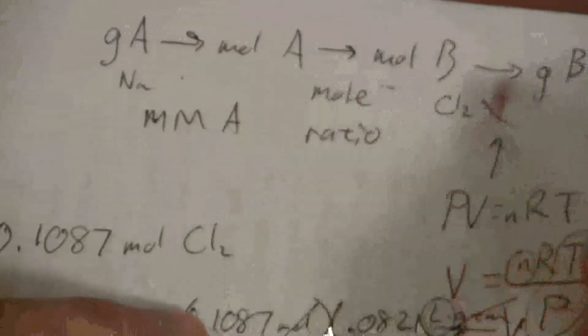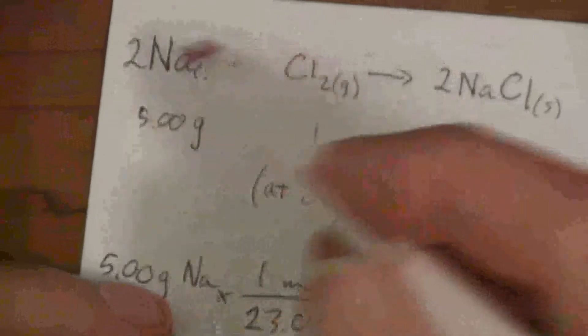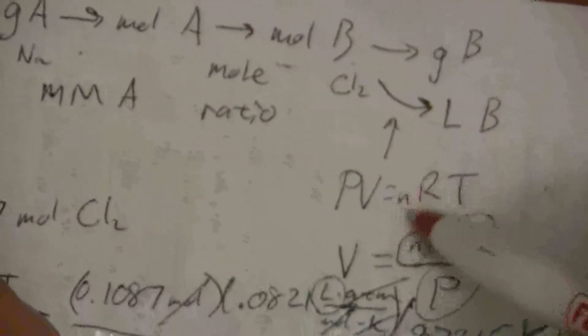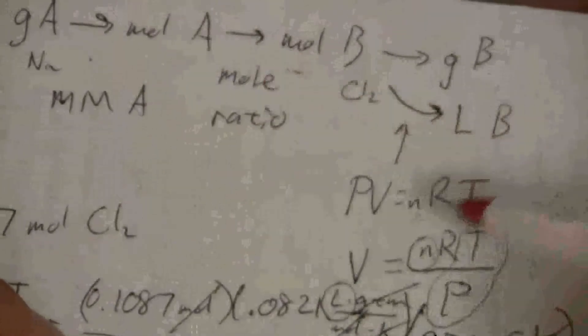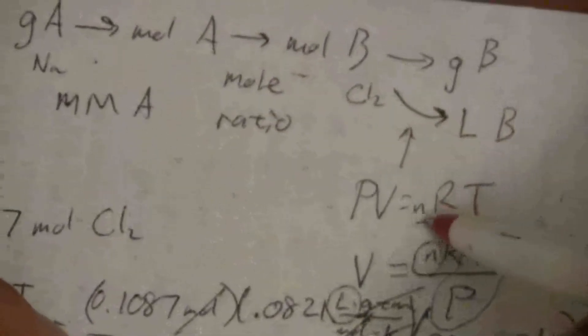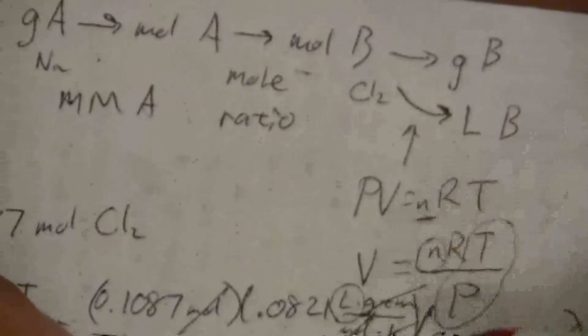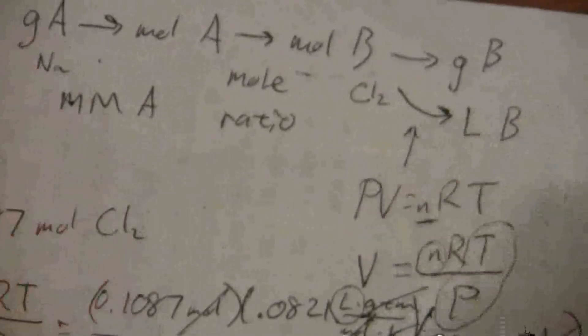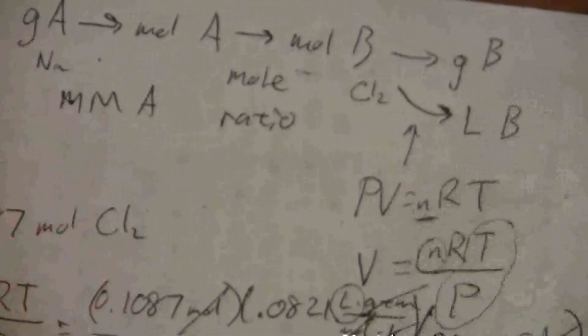But the idea is you can use PV equals NRT in conjunction with a balanced equation where you have that mole ratio going from moles of one substance to moles of another. The same old things that we've seen before. Whenever you get into moles, well, that's our link into PV equals NRT. Whenever we're dealing with a gas, then we can find the moles of that gas, and given its conditions, we can find its volume as well.